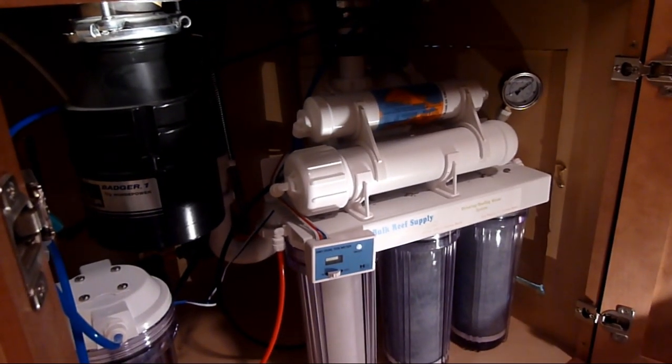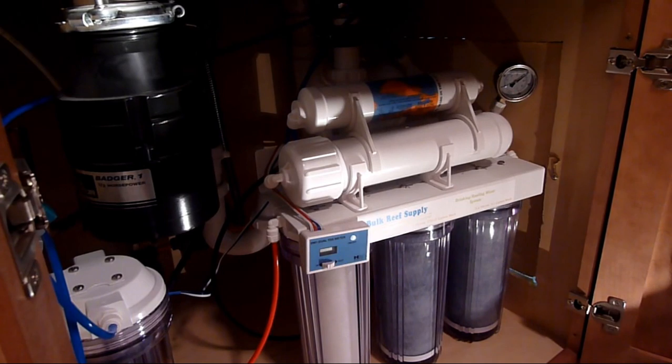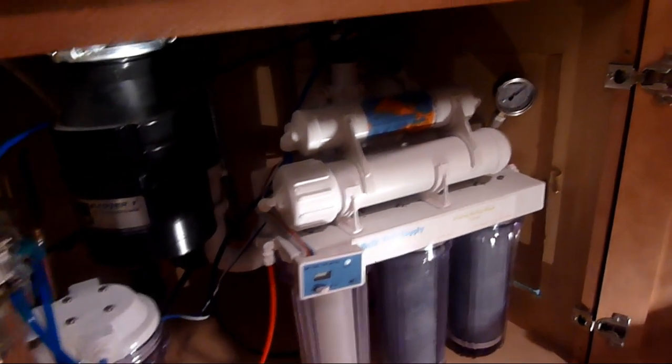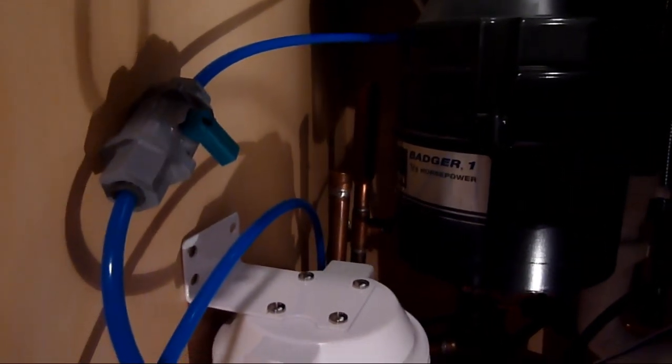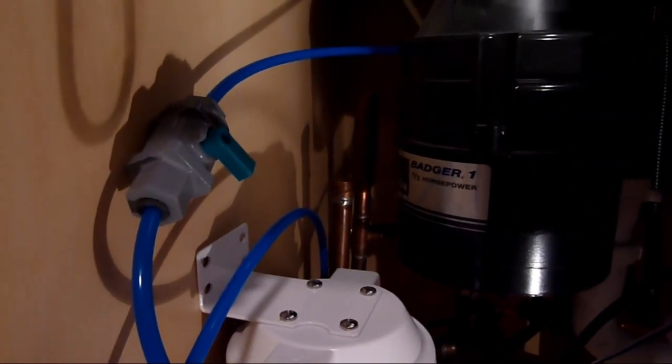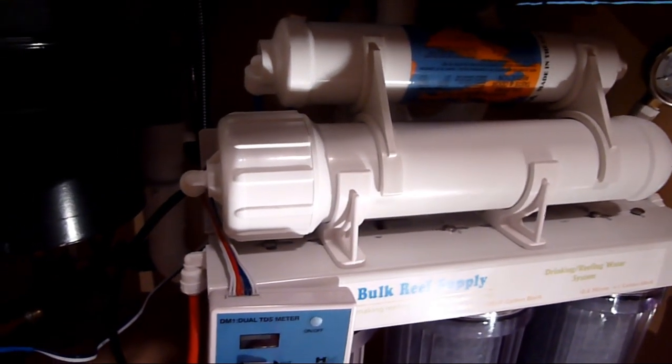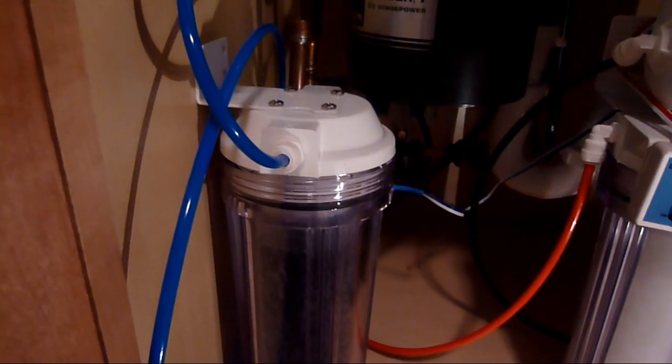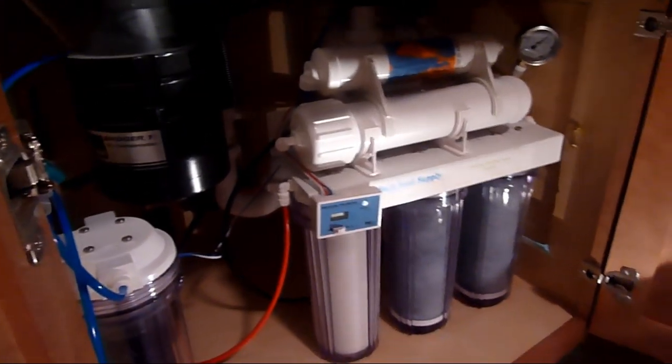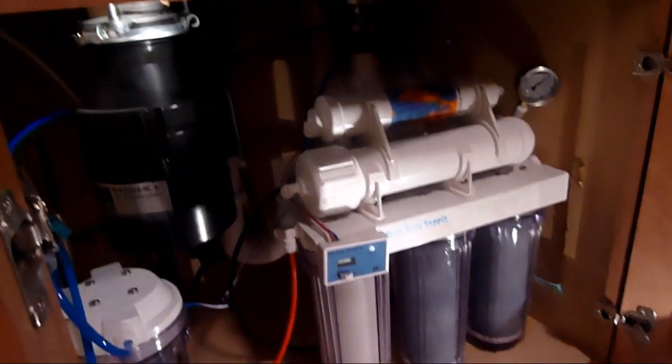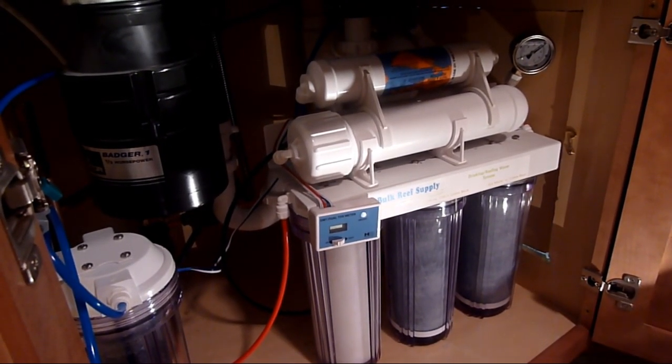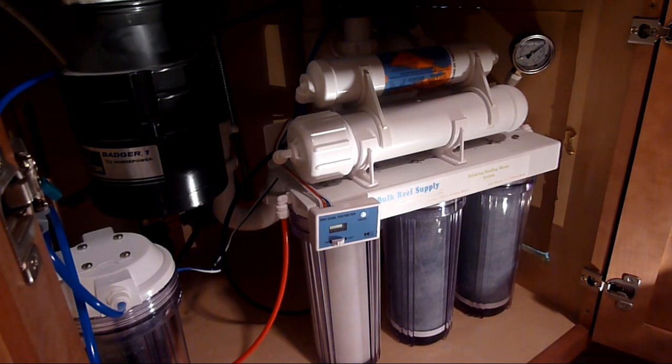And then when it comes to the aquarium side of things what you do is you flip this switch on this valve and what that does is it takes the water out of the RO membrane and then it passes it through this deionization filter canister and you utilize the water coming out of there for your aquarium pretty simple stuff. As far as the installation of this system goes it was really easy thanks to a great video that bulk reef supply made.